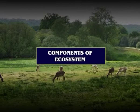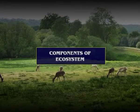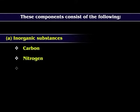Each ecosystem has two main components: abiotic and biotic components. Abiotic components are the non-living components or the physical environment prevailing in an environment. This component has a strong influence on the structure, distribution, behavior, and interrelationship of living organisms. These components consist of: A. Inorganic substances such as carbon, nitrogen, phosphorus, sulfur, etc., that are involved in the material cycle.